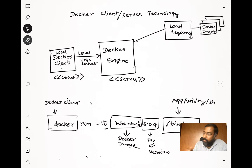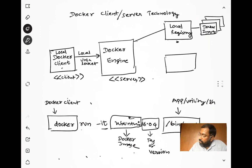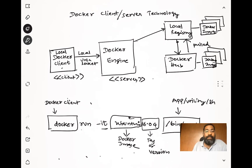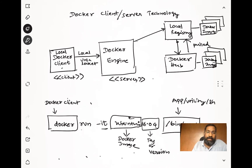If the local registry doesn't have that image, Docker goes to something called Docker Hub, which is the remote registry. Docker Hub contains all the open source Docker images. The image is then downloaded - pulled - from Docker Hub and cached in the local registry. End of the day, whenever you're trying to create a new container, that container image must be in your local registry. That gives a basic idea of what the Docker client is, what the Docker engine is, and what the local and remote registries are.